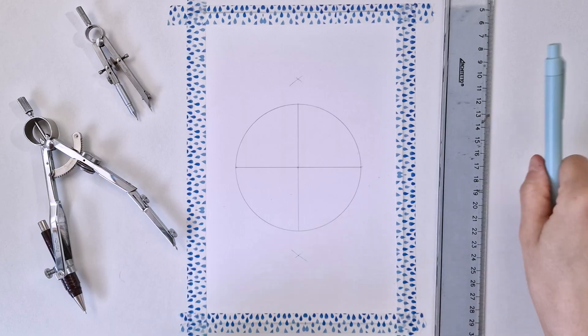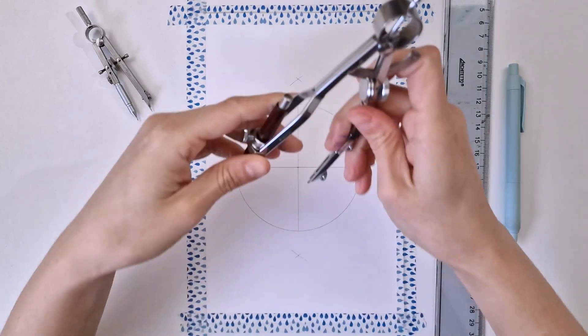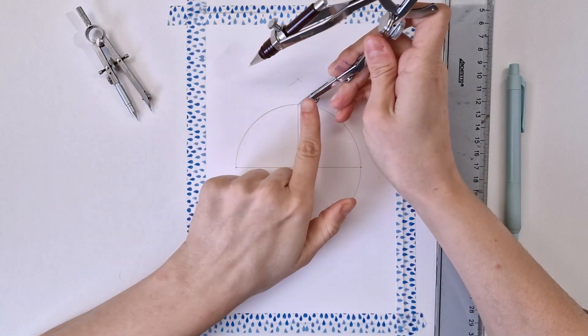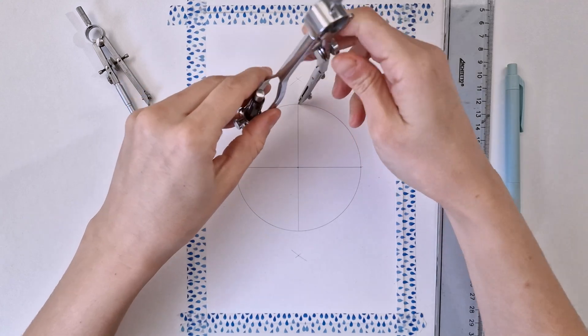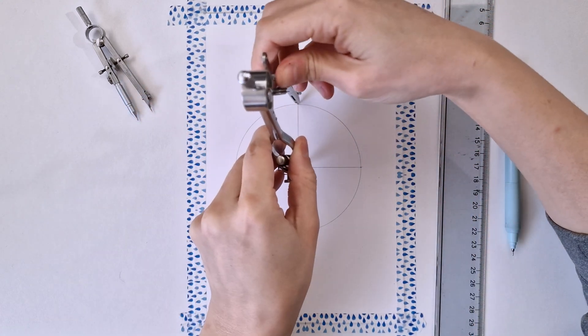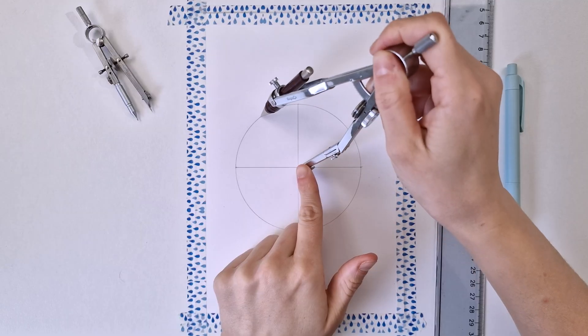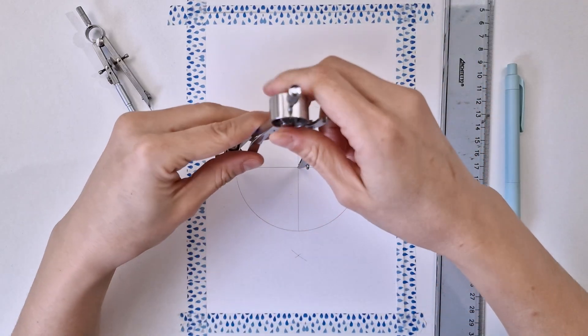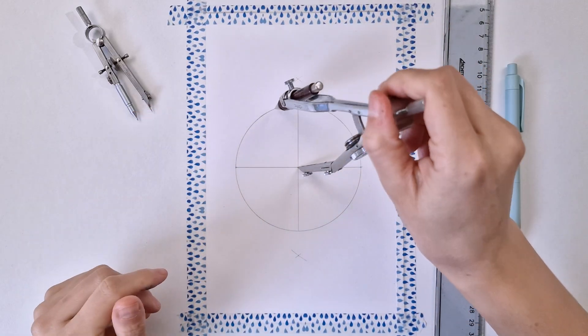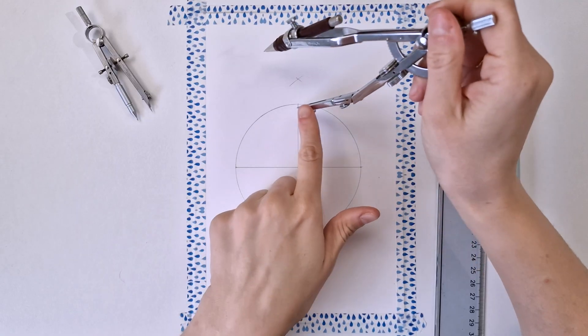Now let's grab our compass back again and let's move it to the initial radius. Here I'm double-checking my radius again. You really want to make sure you're matching the initial radius.